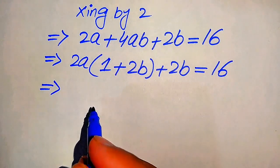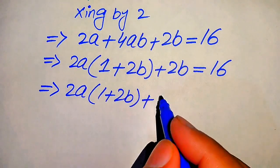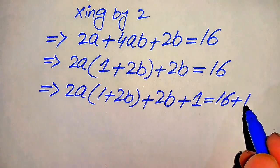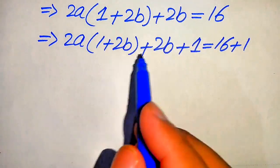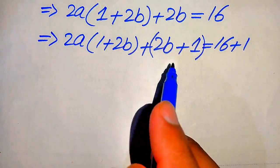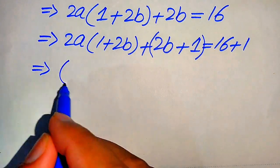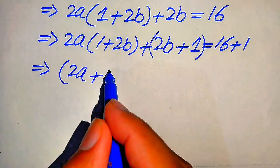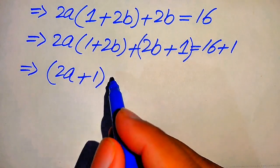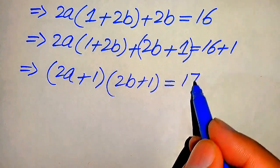We add 1 on both sides, giving us 2a times (1 plus 2b) plus (2b plus 1) equals 17. We see that (1 plus 2b) and (2b plus 1) are the same factor. Taking that common factor out, we get (2a plus 1)(2b plus 1) equals 16 plus 1, which is 17.